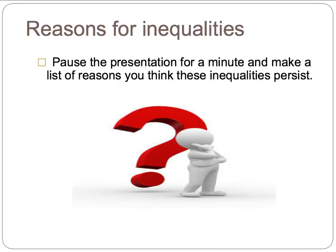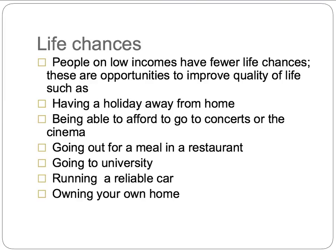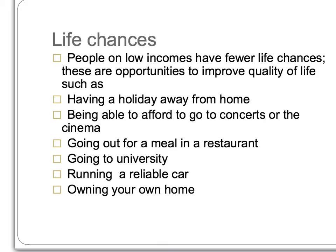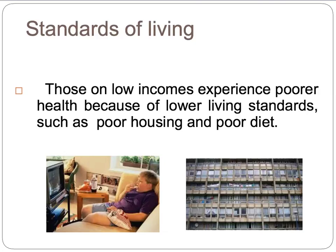Pause this presentation and make a list of reasons you think these inequalities persist. Sociologists suggest a number of reasons why those on low incomes have worse health outcomes. First, people on low incomes have fewer life chances — opportunities to improve quality of life such as holidays, going to concerts or the cinema, dining out, going to university, running a reliable car and owning your own home. Standards of living is also an issue: poorer health results from lower living standards such as poor housing and poor diet.